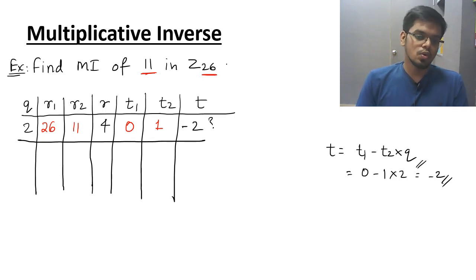How to find row 2 elements? It's the shifting. R2 will be shifted here. R would be shifted here. Similarly, T2 would be shifted here and T would be shifted here. The same logic is there in all the 3 concepts. Nothing new. So 11, 4, 1 minus 2.